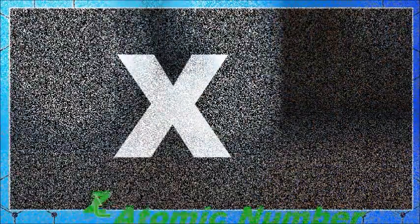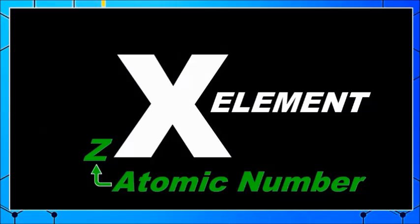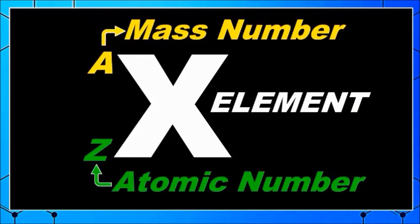There is an accepted way to denote the atomic number and mass number of an atom of an element. Hypothetically, the atomic number is represented by the symbol Z, the atom of an element is represented by the symbol X, and lastly, the mass number of an atom is denoted as symbol A.